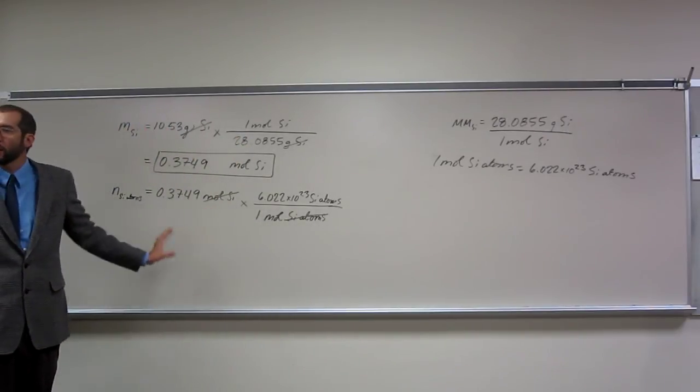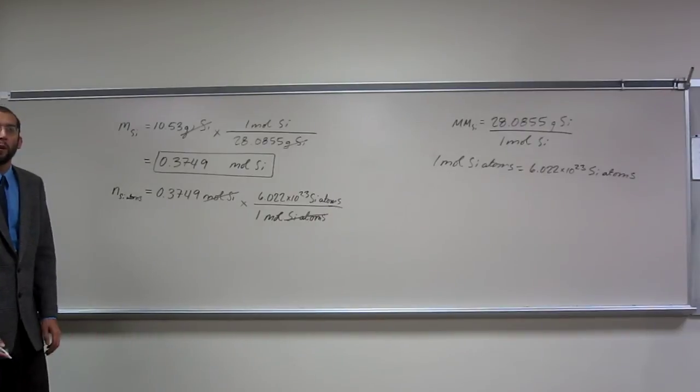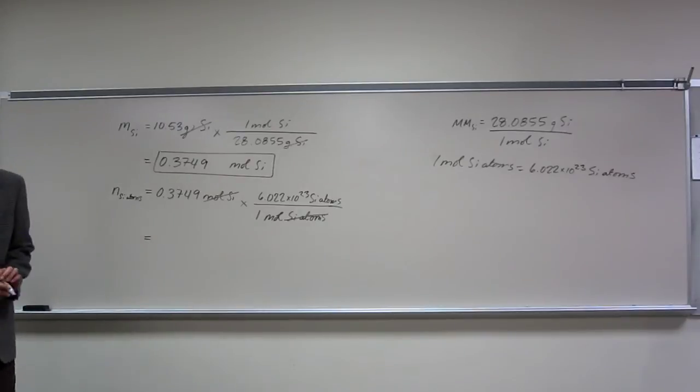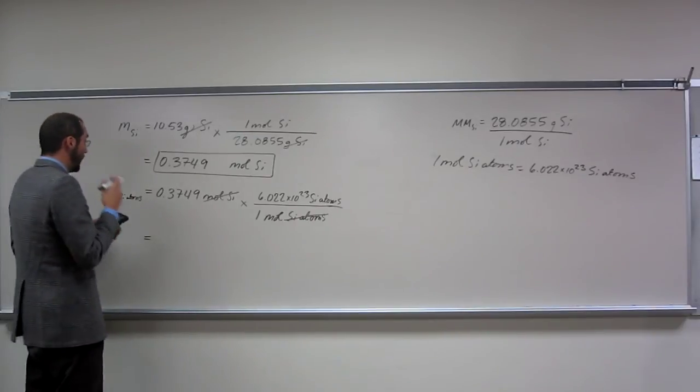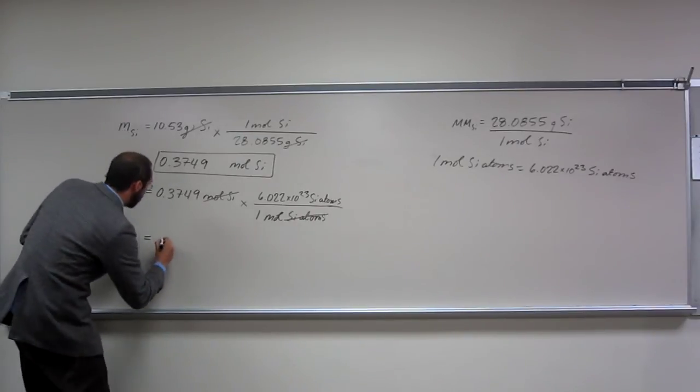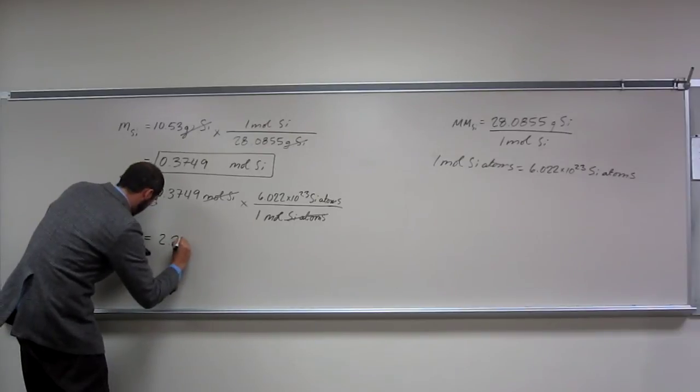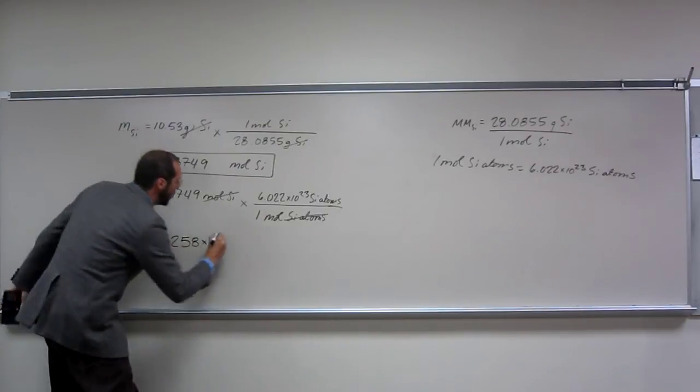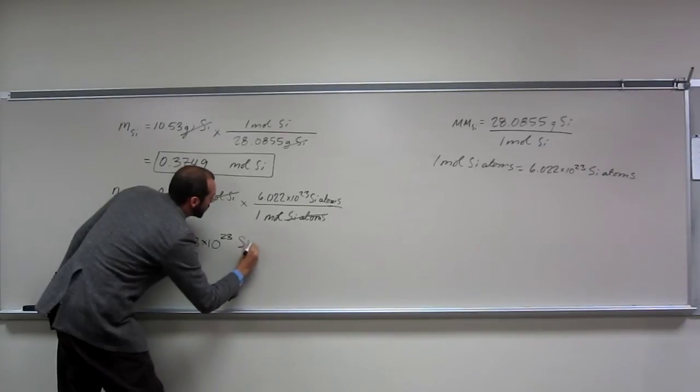Is everybody convinced that through doing this calculation, we should figure out the number of silicon atoms in the sample? Hopefully, even though I don't see anybody nodding their head. And again, four sig figs, 2.258 times 10 to the 23rd of silicon atoms.